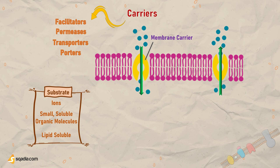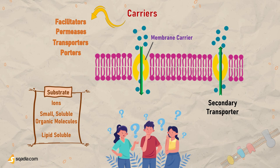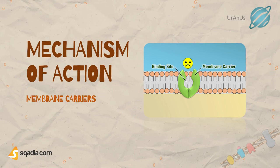But how do membrane carriers actually work? It's not just a matter of opening and closing doors. These proteins have complex mechanisms that allow them to selectively transport specific molecules across the cell membrane, while maintaining the delicate balance of the cellular environment. In this video, we'll explore the incredible world of membrane carriers, delving into their structure, function, and the fascinating ways they interact with other molecules in the cell. Get ready to discover the secrets of cellular transport and the amazing world of membrane carriers.